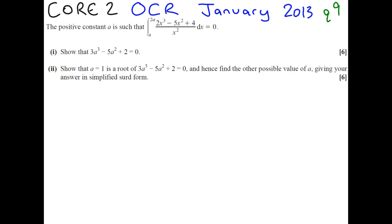So part I says, show that 3A cubed minus 5A squared plus 2 equals 0. And the information that we've got to base this on is this. If we simplify what we're trying to integrate, this is 2X cubed minus 5X squared plus 4, all divided by X squared.